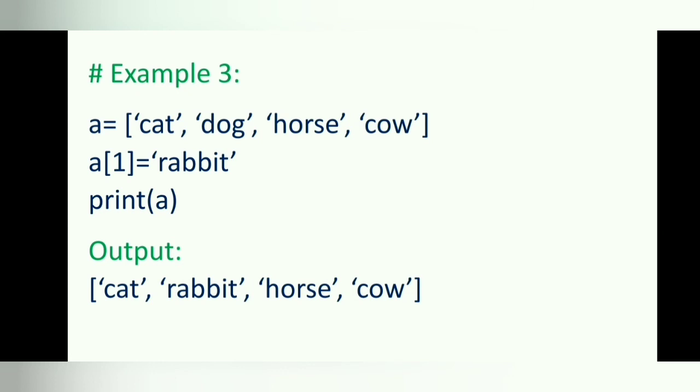A list is a mutable data type in Python. So, we can modify a list, but we cannot modify a tuple or string because they are immutable.